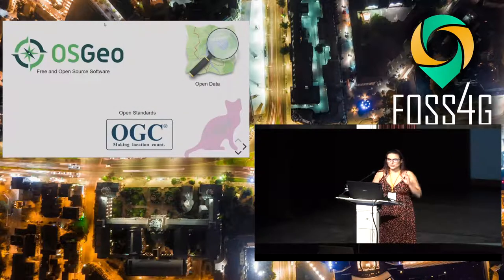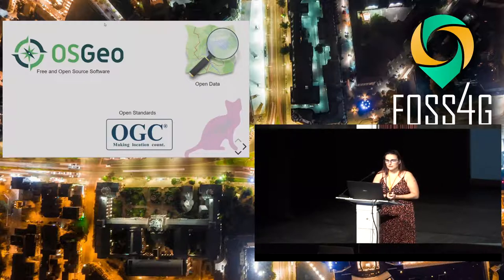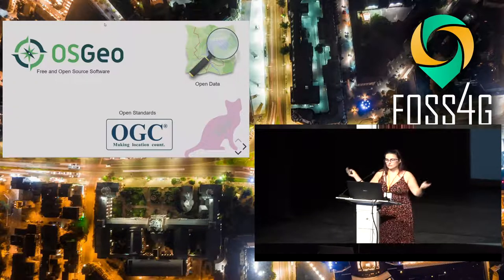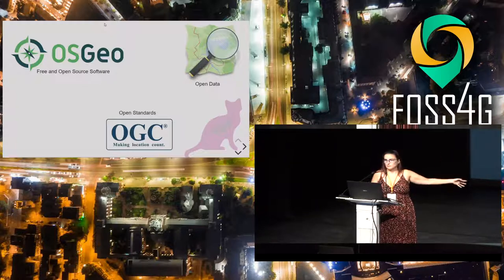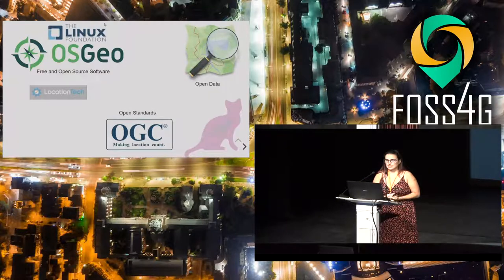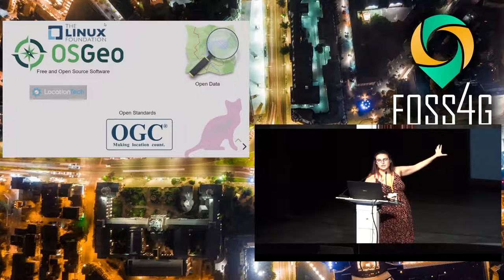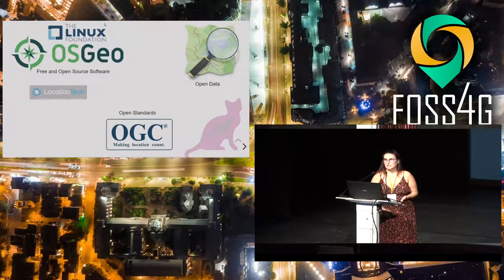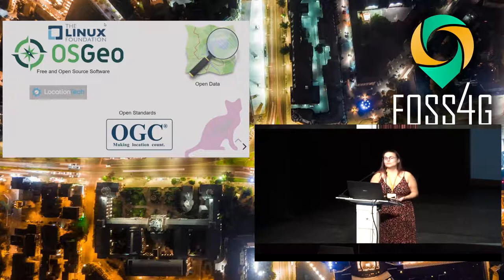For those of you who may be new to the open geospatial community, there are three main categories. On one side, we have open data, led by OpenStreetMap. On the other hand, we have OGC, which has open standards. And then we have the software part, which is led by OSGeo — but we also have the Linux Foundation, Location Tech, and many other communities. OSGeo is an open source geospatial foundation, and we focus only on GIS.